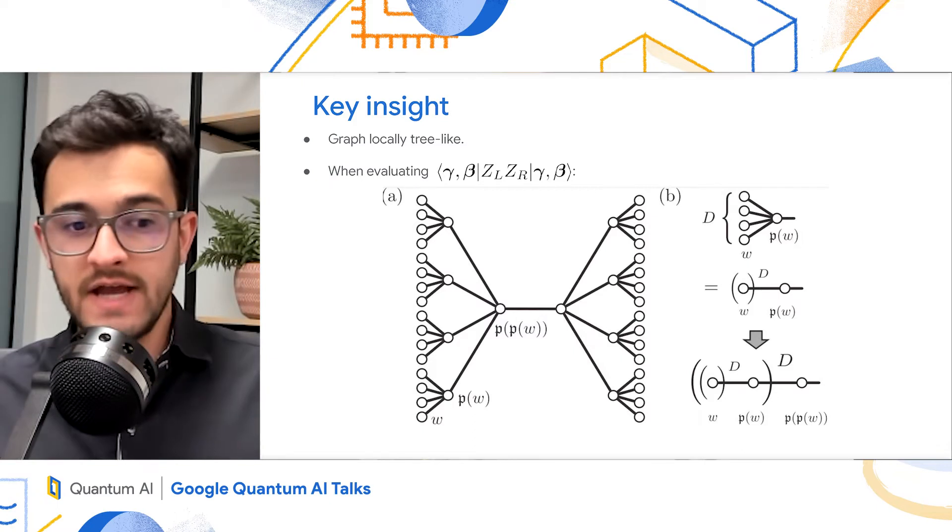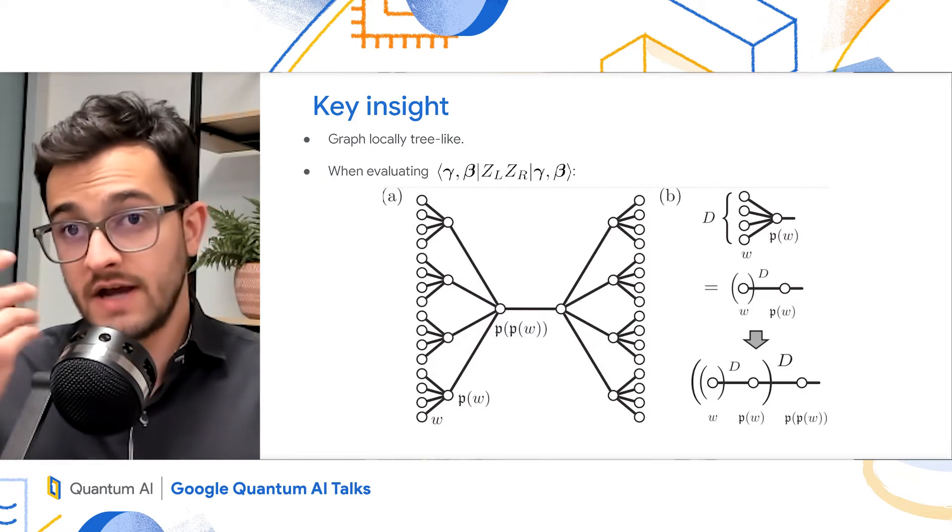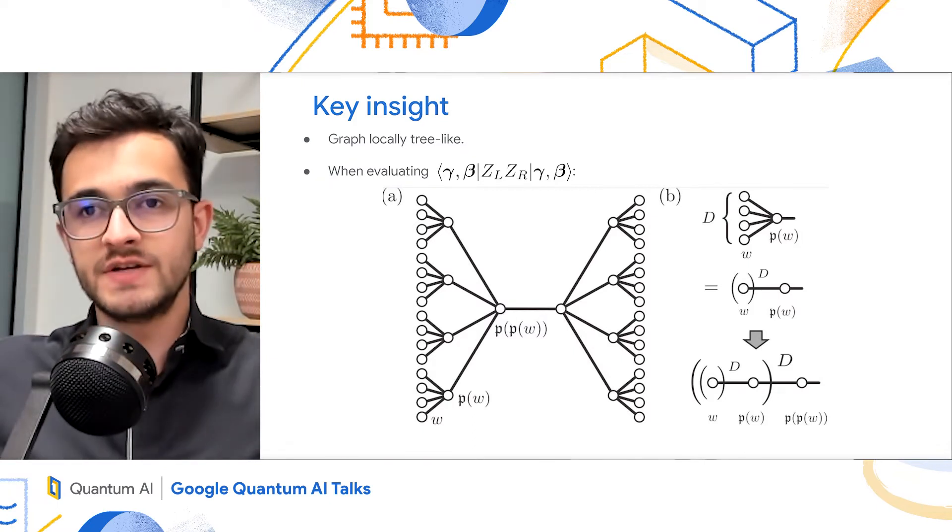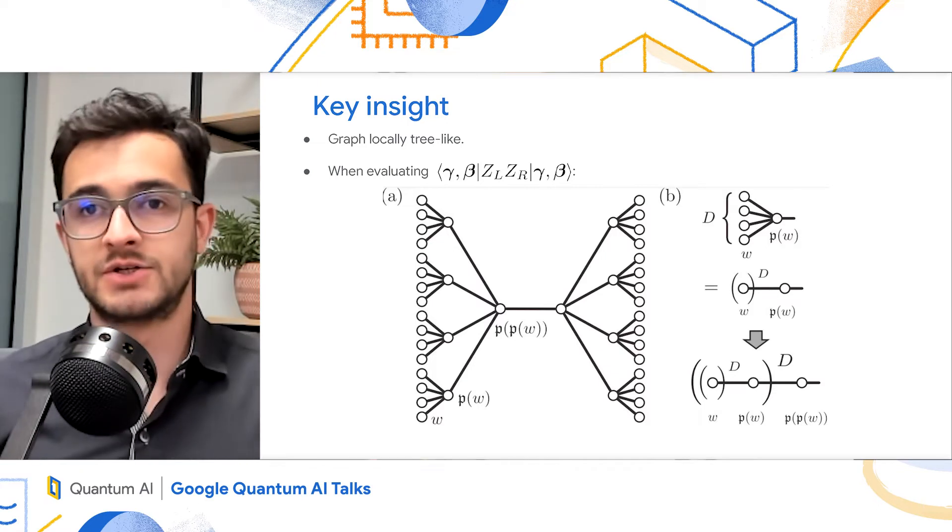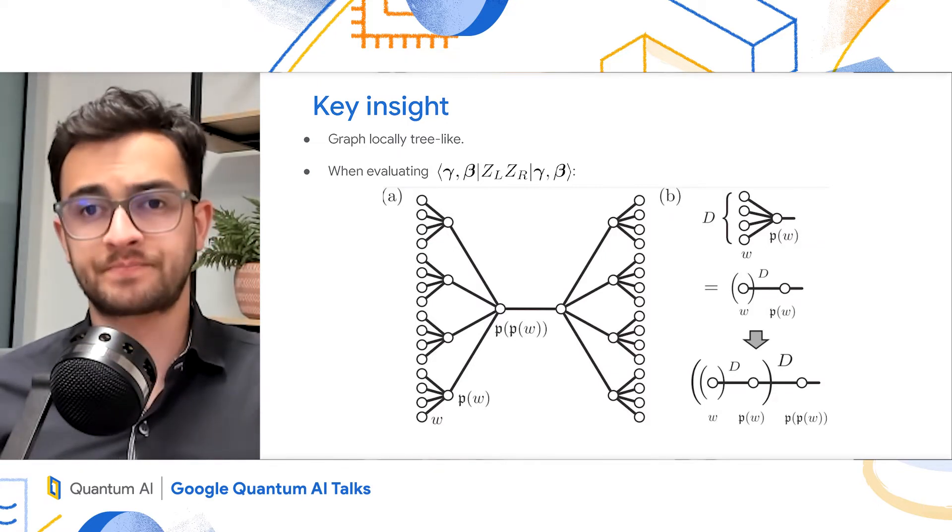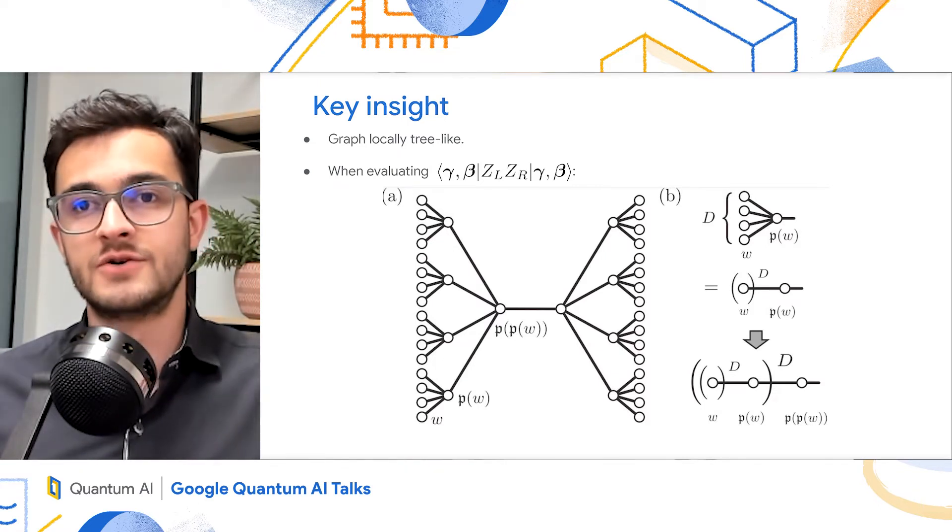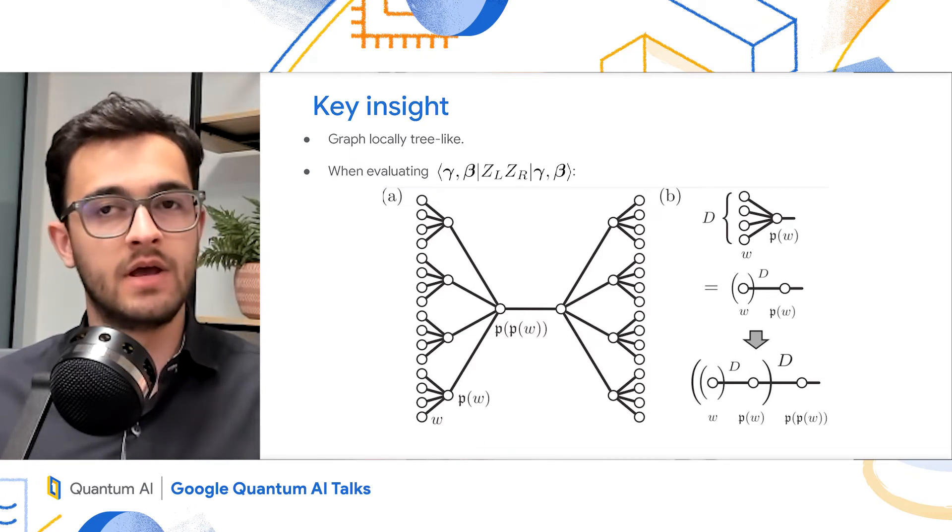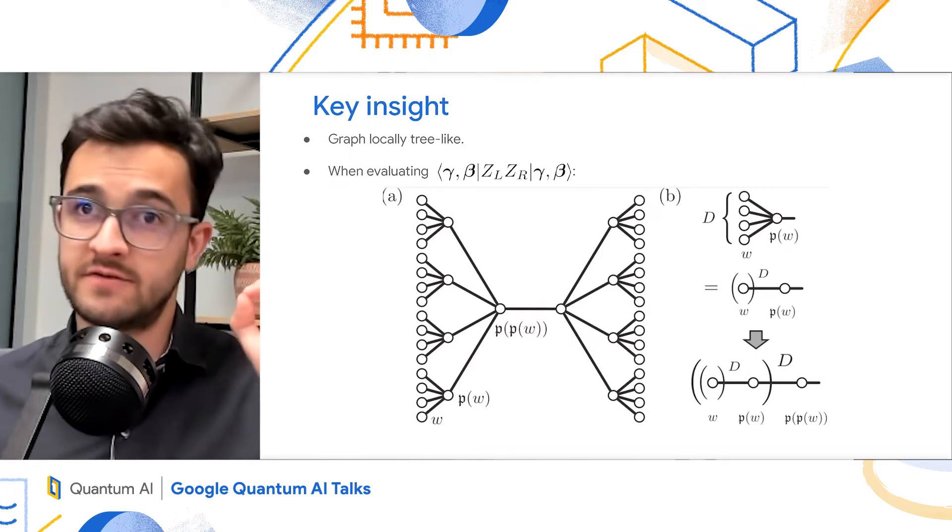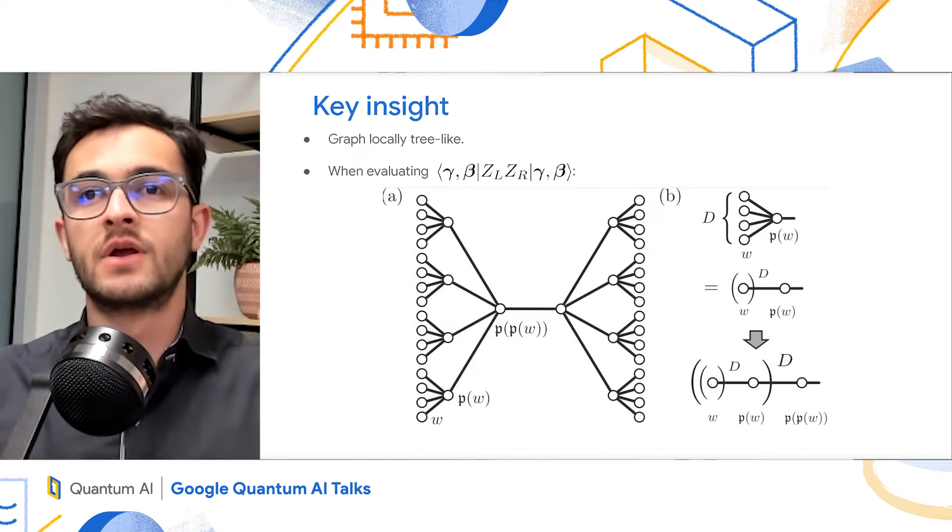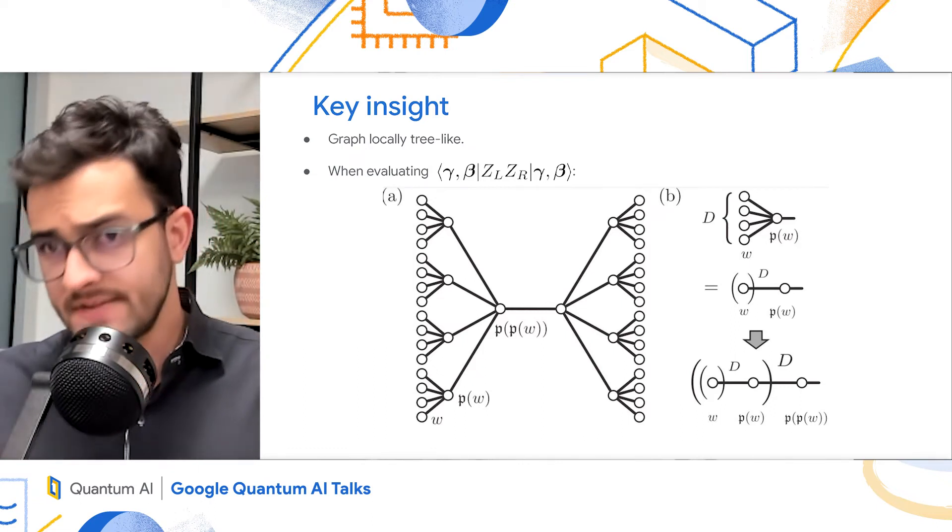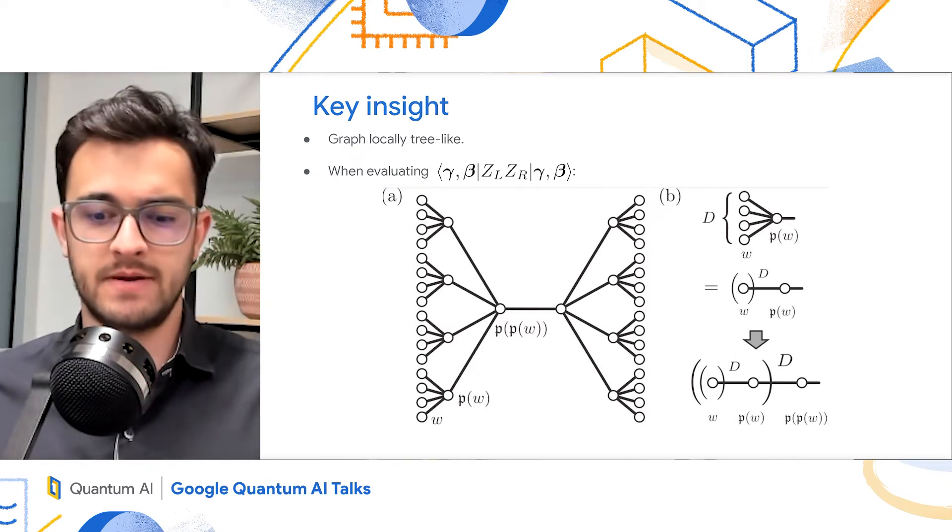In the eyes of the QAOA, it looks like you have two trees glued to their roots, just as in the picture. And given the symmetry of the problem, every leaf contributes exactly the same to its parent. And every parent contributes exactly the same to the parents of parents. So you can recursively collapse this tree, and use the iteration given in the paper.